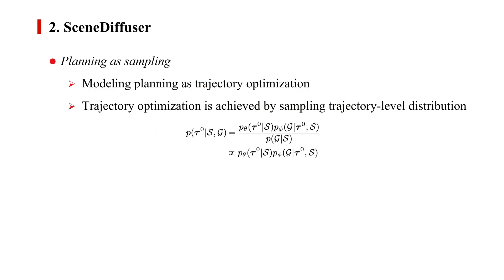To tackle these limitations, Scene Diffuser models planning as trajectory optimization and optimizes the trajectory by sampling trajectory-level distribution. The modeled scene-oriented goal-oriented trajectory is formulated as follows.